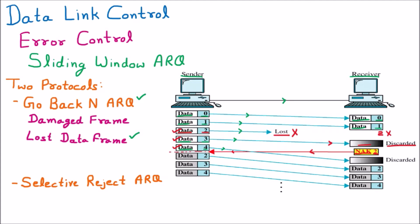Because communication is continuous, the sender keeps sending, and must be aware that it already sent 3 packets after the lost one. The sender will Go Back N — starting from when the NAK arrives, going back N until those N packets before the NAK arrived. The NAK is for packet 2, so going back N to packet 2, the sender retransmits packets 2, 3, and 4. The receiver was waiting for packet 2 and now receives data packet 2, 3, and 4. This is how Go Back N ARQ handles a lost data frame.